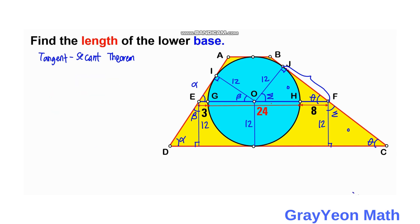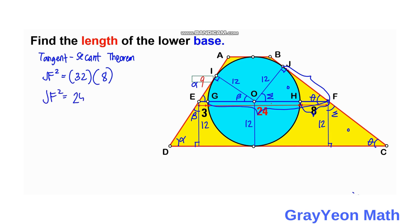For the length JF, JF is the tangent segment, so JF² equals the product of the whole secant segment times the external secant segment: JF² = (24 + 8) × 8 = 32 × 8 = 256. Taking the square root gives JF = 16 units.